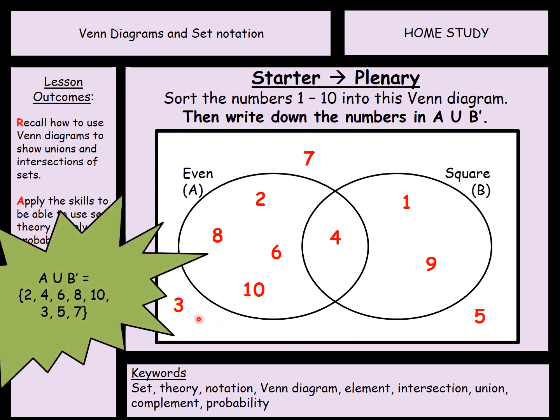So in terms of my list of numbers, we can have two, four, six, eight and 10, because they're in A or not in B. That's these three. So notice that we are missing out one and nine, because they are the numbers that are in B.